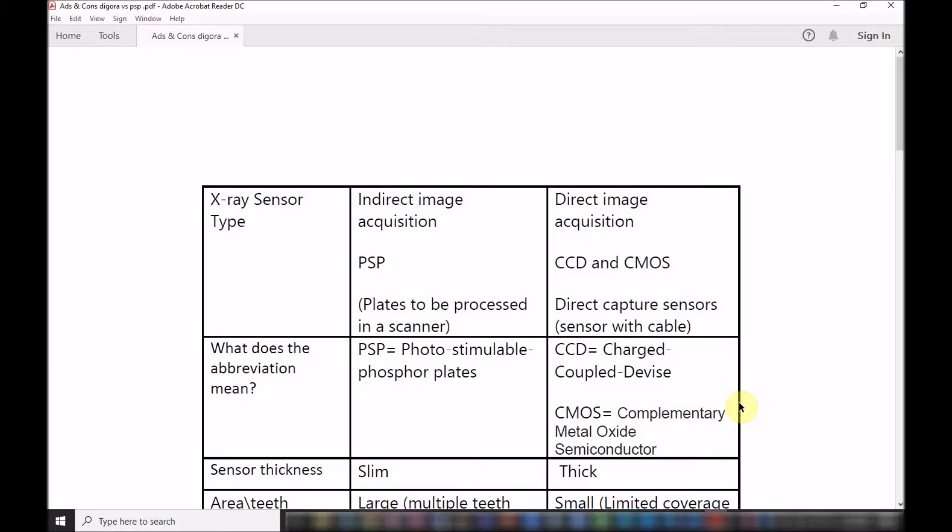They are divided into two major categories. The first one is known as indirect image acquisition or the PSP, and there is the direct image acquisition or the CCD and the CMOS.